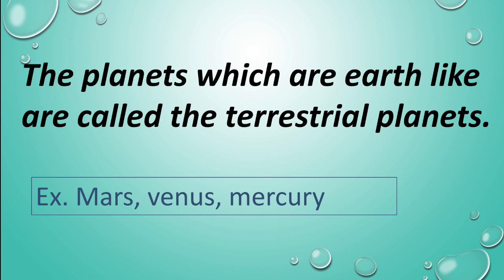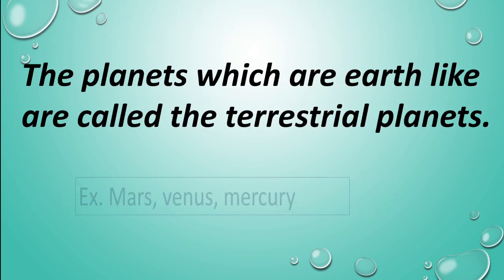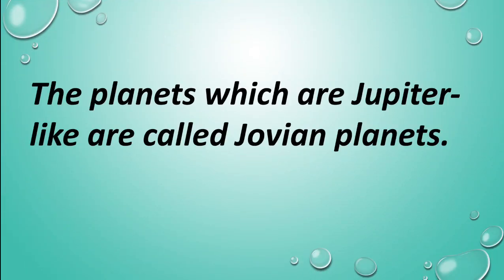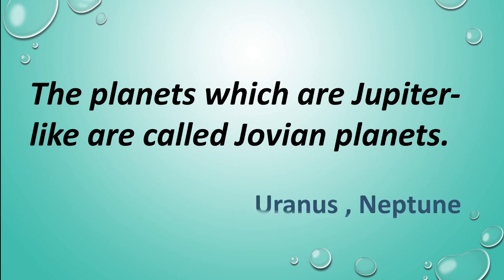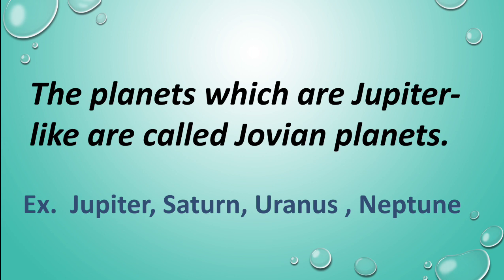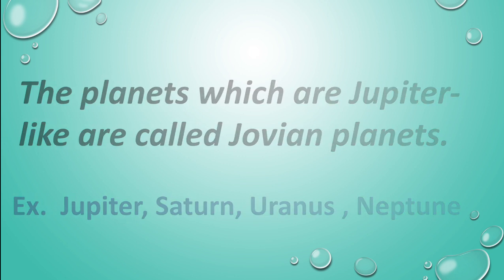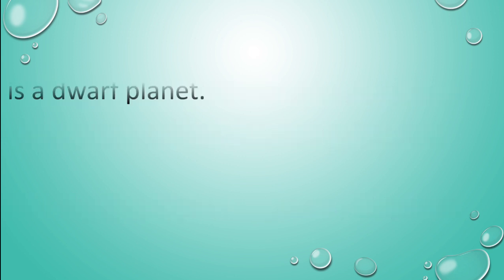The planets which are Jupiter-like are called Jovian planets. Jupiter, Saturn, Uranus, and Neptune are Jovian planets. We have seen terrestrial planets and Jovian planets. Pluto is not in either of these two categories.